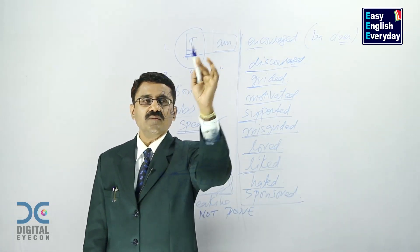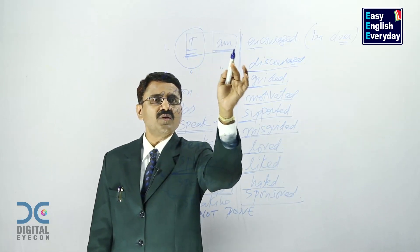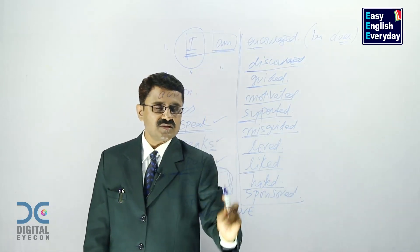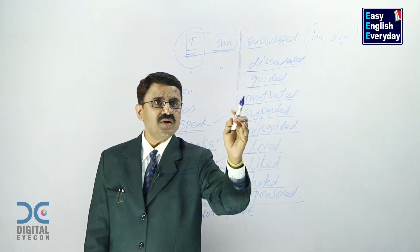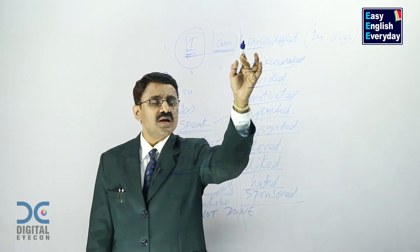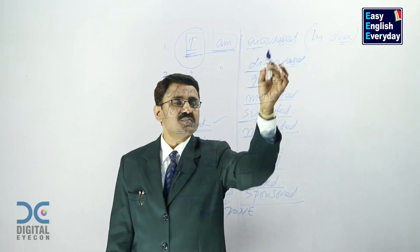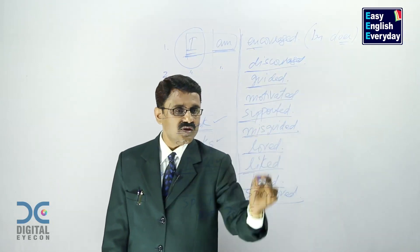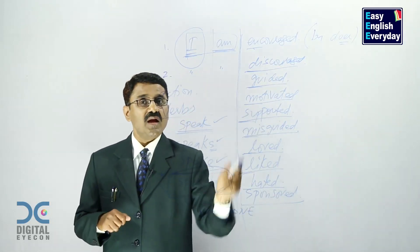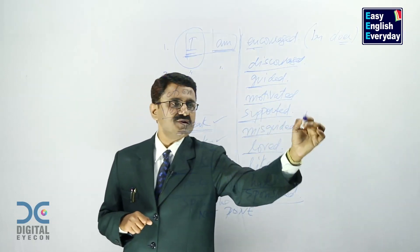Take a subject 'I,' put the verb 'am,' and because it goes with 'I' it indicates present tense. In this video we are concentrating only on the present tense. Collect as many past participle forms of verbs as you can and make sentences with them. And in grammar, this is called passive voice.